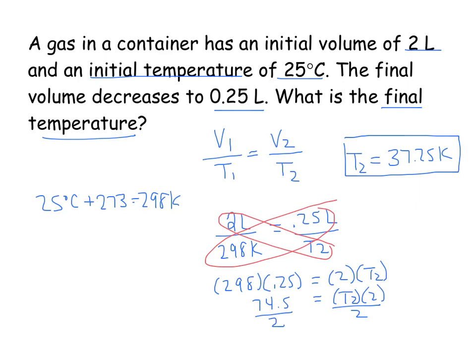If I had to find degrees Celsius, I would subtract 273 from this Kelvin temperature. And my final temperature in degrees Celsius would be negative 235.75 degrees Celsius.